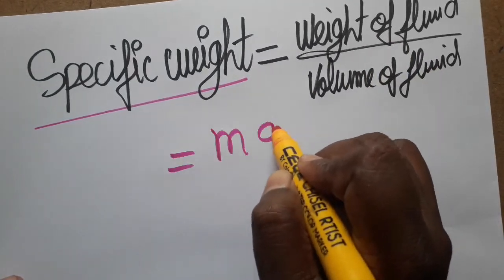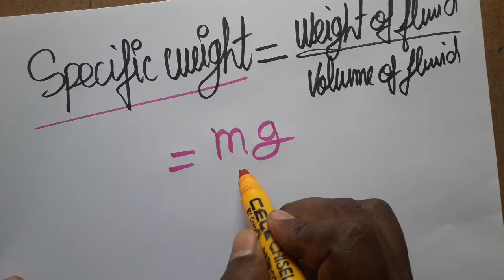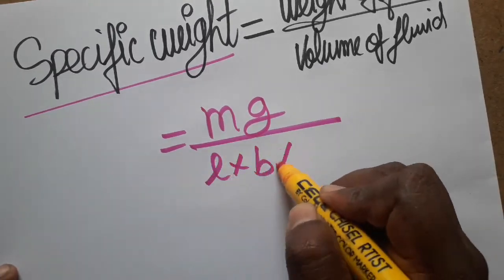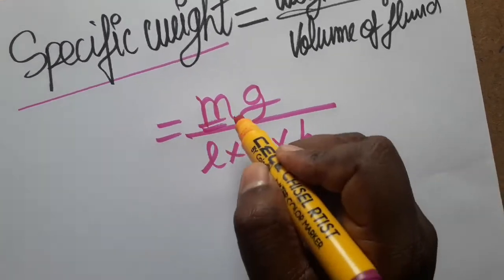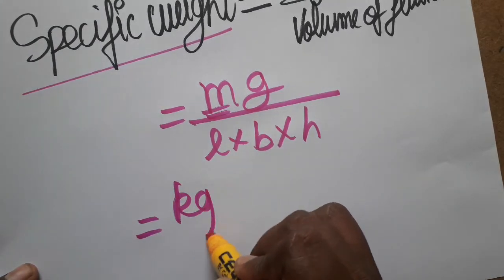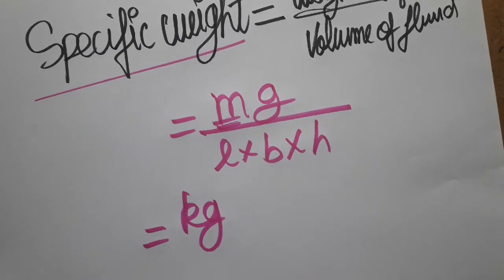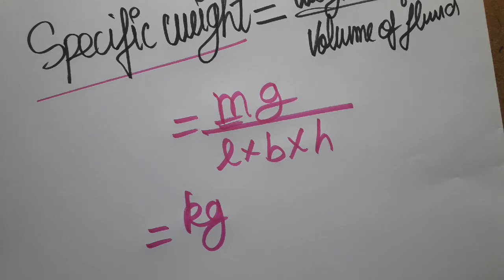Weight is equal to mass into gravity. Volume is length into breadth into height. Mass SI unit is kg. Acceleration due to gravity SI unit is meter by second square.